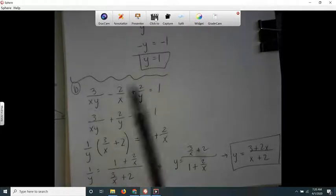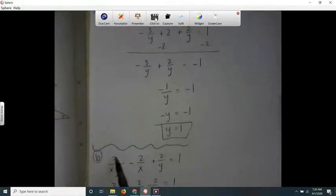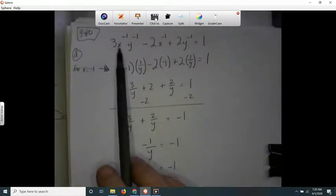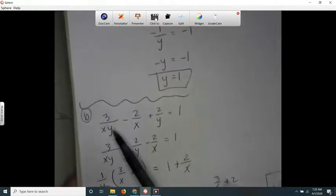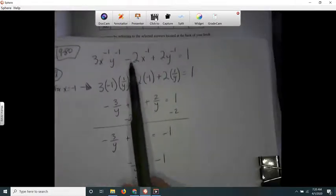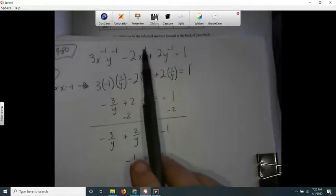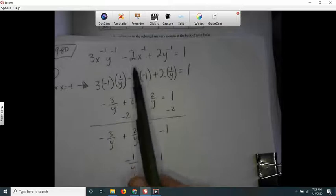So I skipped some steps. I wrote this as 3 over x times y, because the original, see how that's like 1 over x and 1 over y, so I just wrote that as 3 over xy. And then the second one, x to the negative 1, that's 1 over x, so negative 2 times 1 over x is negative 2 over x.